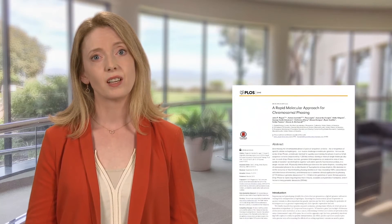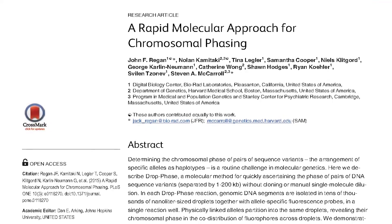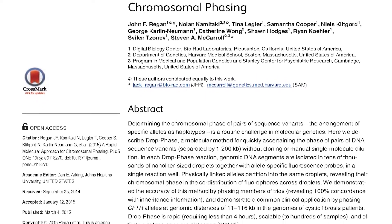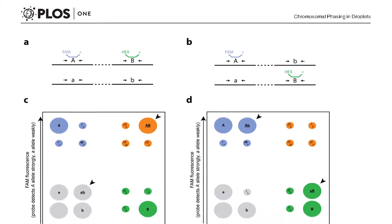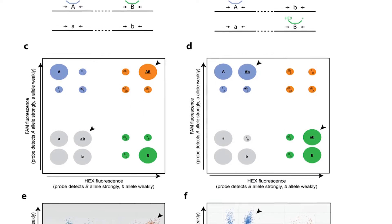But despite major advances in genomic technologies, so far getting this important chromosomal phasing information has proven very difficult. To address this, researchers from Biorad and Harvard Medical School recently published a study in PLOS One on a new way to determine whether gene variants reside on the same or different chromosomes.